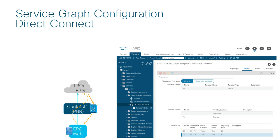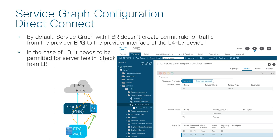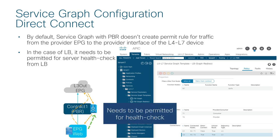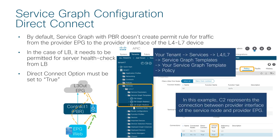Another important configuration consideration is the direct connect option in the service graph template. By default, a service graph with PBR creates permit and redirect rules for the traffic discussed. However, it doesn't create a permit rule for traffic from the provider EPG to the provider interface of the service device. This is fine for a firewall or IPS, but not for a load balancer because the load balancer does health checks to the provider. To permit this traffic, the direct connect option in the service graph template must be set to true, so that a permit rule for traffic from the provider EPG to the provider side of the load balancer is also created.